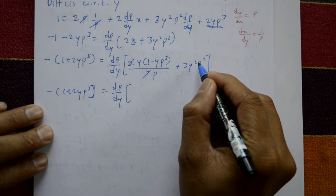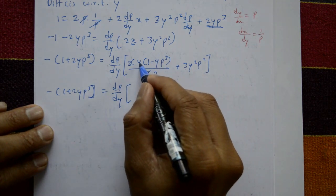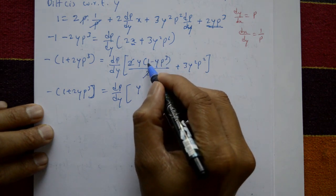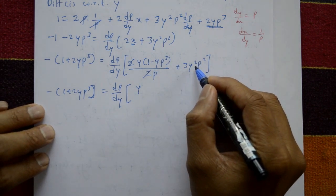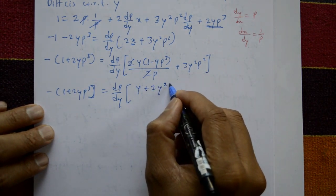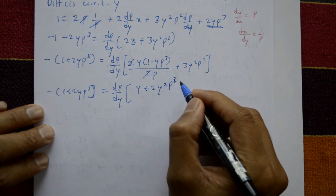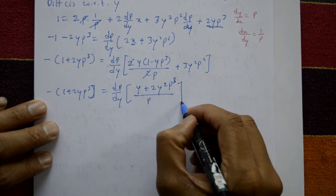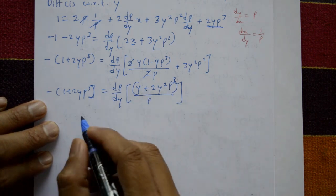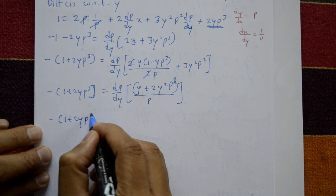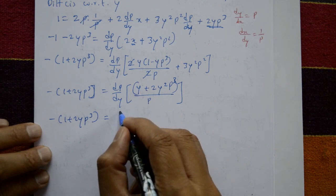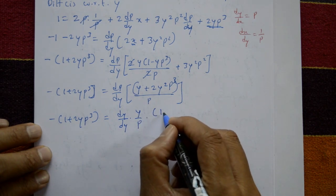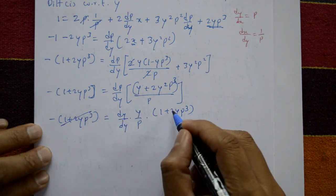Multiply out: 3y²p³ times the bracket gives y minus y²p³, and 3y²p³ plus 2y²p² cross-multiplied, plus 2y²p³ divided by p. Take y as common: minus 1 + 2yp³ into dp/dy times y/p. The bracket (1 + 2yp³) cancels on both sides.